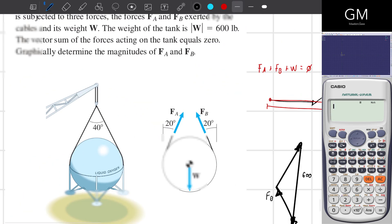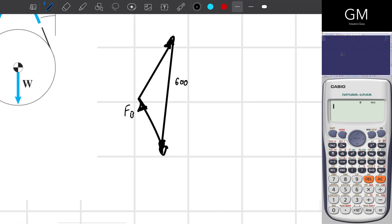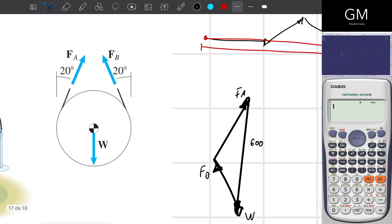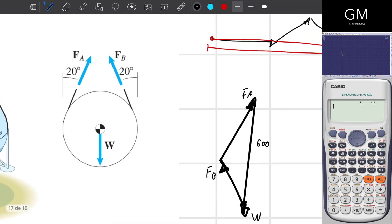And they are asking me for the magnitudes of F_A and F_B. So F_A, F_B, W, right here they are telling me the angle.